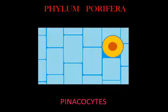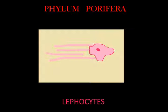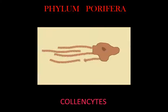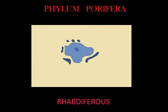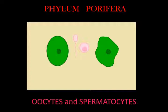Lophocytes are amoeba-like cells that move slowly through the mesohyl and secrete collagen fibers. Collenocytes are another type of collagen-producing cell. Rhabdiferous cells secrete polysaccharides that also form part of the mesohyl. Oocytes and spermatocytes are reproductive cells.